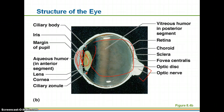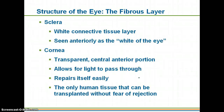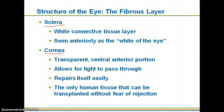The outer layer, or fibrous layer, is made up of the sclera — the white of your eye. It is white connective tissue, relatively thick, and serves as protection. It continues to the front of the eye, but obviously you won't be able to see if it stayed white, so it becomes the cornea, which is transparent and allows light to pass through.